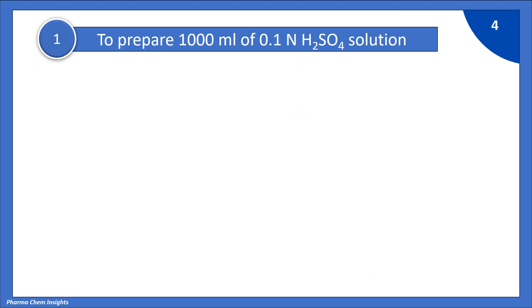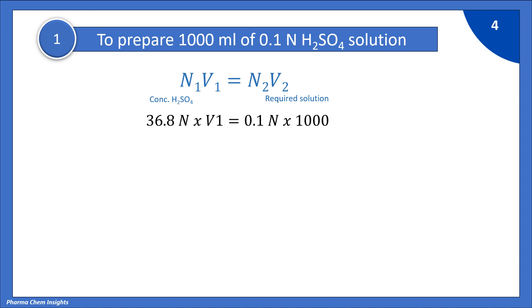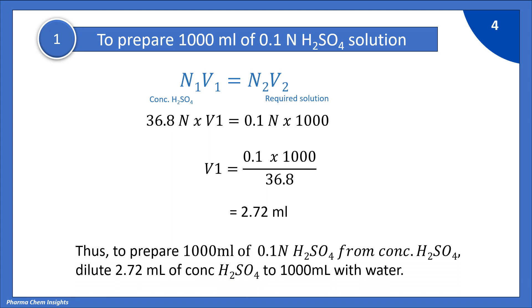First example: to prepare 1000 ml of 0.1 normal H₂SO₄ solution. Using the normality equation N1V1 = N2V2, where N1V1 represents concentrated H₂SO₄ and N2V2 represents the required solution to be prepared. Putting the values: 36.8 × V1 = 0.1 × 1000. Therefore, V1 = (0.1 × 1000) ÷ 36.8 = 2.72 ml. To prepare 1000 ml of 0.1 normal H₂SO₄, dilute 2.72 ml of concentrated H₂SO₄ to 1000 ml with water.